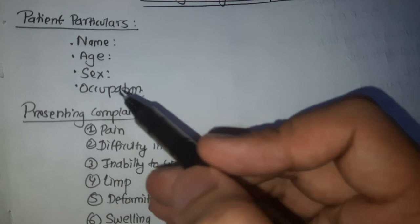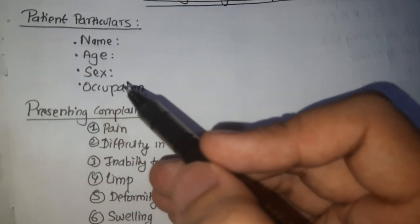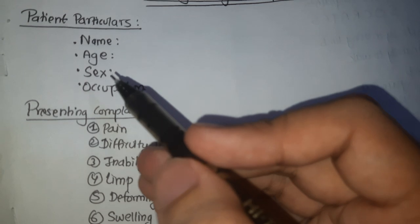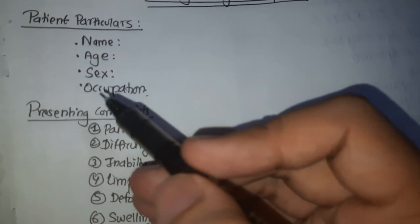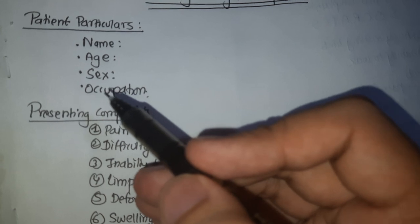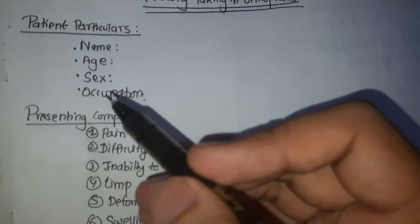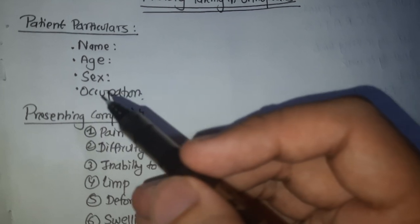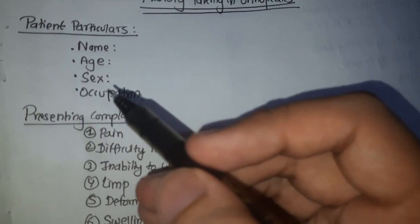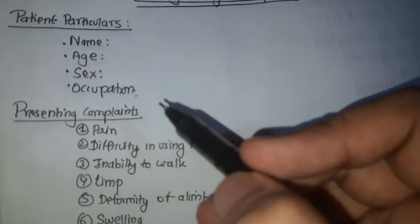Some diseases are more common in males whereas some are more common in females. For example, scoliosis and congenital dislocation of the hip are more common in females, and rheumatoid arthritis is more common in females. Ankylosing spondylitis is more common in males, and slipped epiphysis is also more common in males.